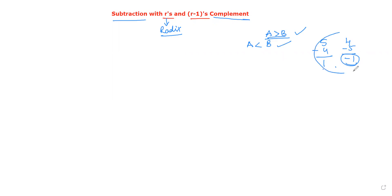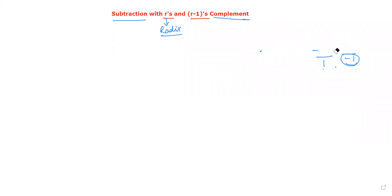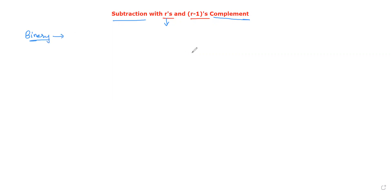In both subtraction cases we can apply complement methods. This is very important. It is very easy to subtract numbers for any number system using any kind of complement method. In the binary number system, there is one's complement and two's complement — two methods. The first is one's complement, and the next is two's complement.